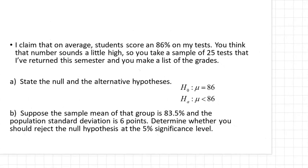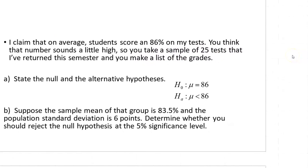Let's take a look at this particular problem. We're going back to tests — I claim that on average students score an 86% on my test. You think that sounds a little high, so you take a sample of 25 tests and make a list of the grades. The null hypothesis is simply that the mean is 86. The alternative hypothesis is what you come up with: you think the mean is less than 86, so H_a is that the mean is less than 86. You go out, sample 25 tests, and find a sample mean of 83.5%.